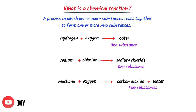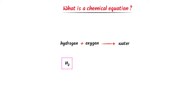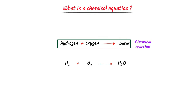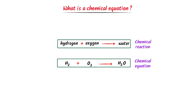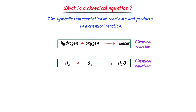These are all examples of chemical reactions. Now, what is a chemical equation? Consider the reaction: hydrogen and oxygen gas react to form water. Hydrogen (H₂) and oxygen (O₂) don't exist independently — the formula of water is H₂O. When we represent a chemical reaction using symbols and formulas, this format is known as a chemical equation. We define chemical equation as the symbolic representation of reactants and products in a chemical reaction.